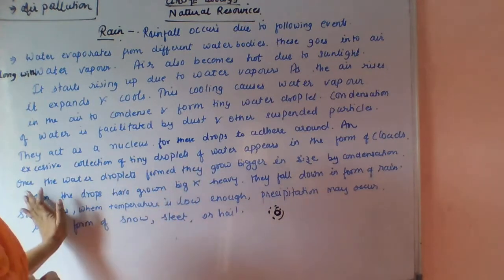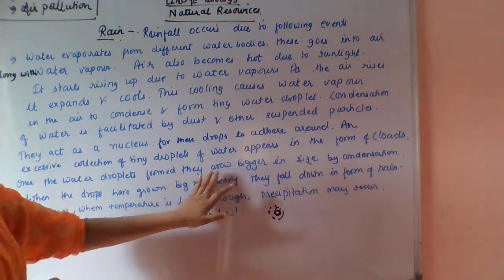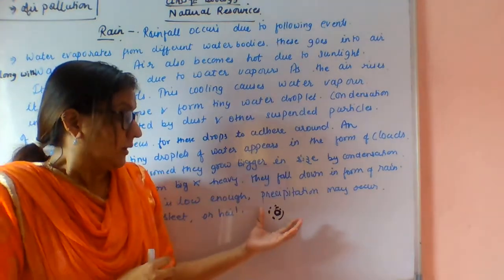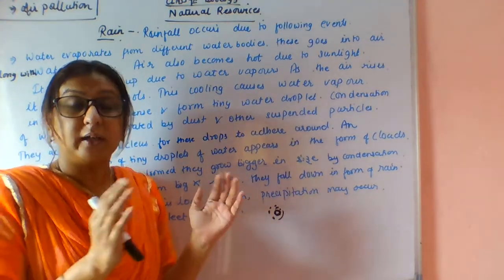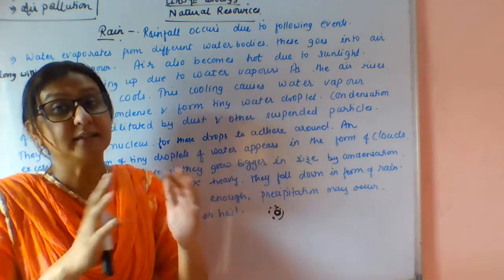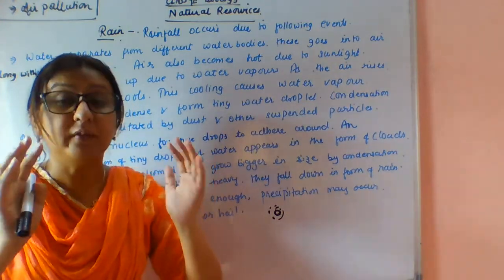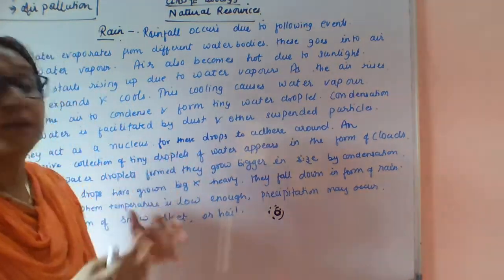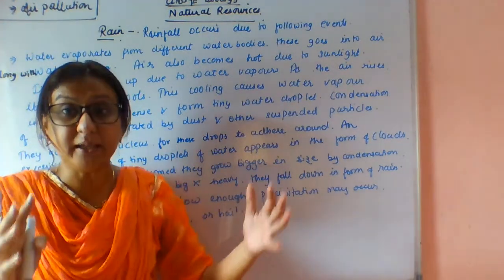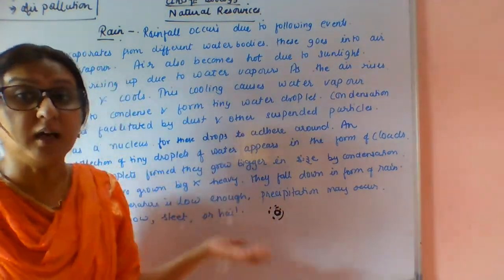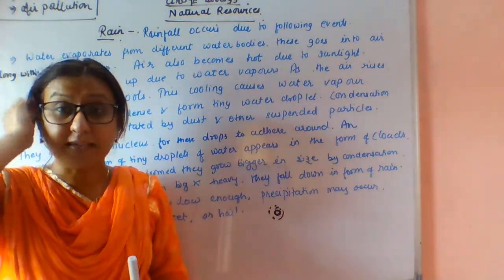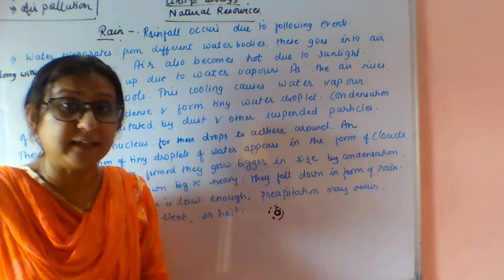Once the water droplets form, they grow bigger and bigger in size. The water vapor keeps cooling and condensing to form bigger droplets. When the droplets become very heavy and big, they fall down onto the earth's surface. In earlier classes you also read about the water cycle — it is a very common topic.